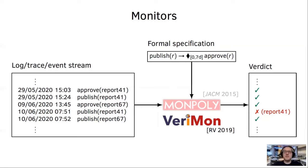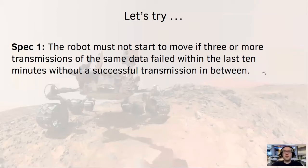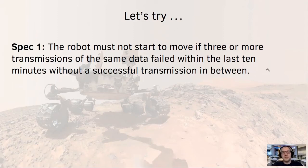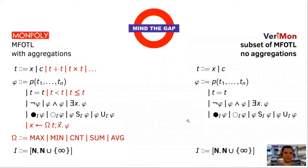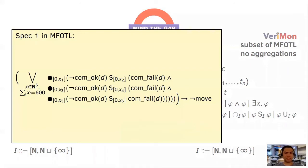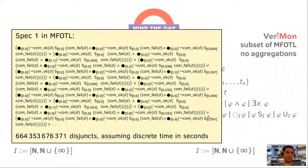Let me show you two simple policies that I want to monitor. First, the robot must not start to move if three or more transmissions of the same data failed within the last 10 minutes without a successful transmission in between. And second, the module with the highest energy consumption must be reported to ground control within one minute. Well, I think there is a problem. As you can see here on the right, Verimon specification language is actually a proper subset of Monpoly's language. In particular, aggregations are not supported and you need those for your second property.